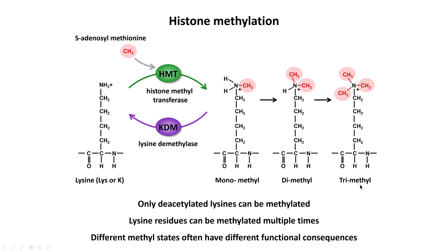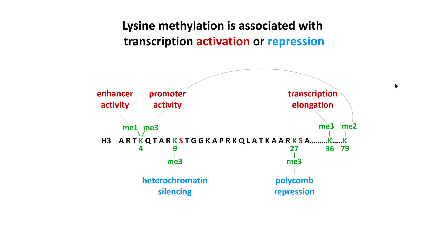These different methyl states — mono, di, tri — often have very different functional consequences because they bind completely different proteins. So histone methylation in itself doesn't predict what's going to happen. What matters is the methylation state and which particular lysine is methylated. For example, the trimethylation of lysine 4 and the dimethylation of lysine 79 on H3 are closely associated with active gene promoters, whereas the monomethylation of lysine 4 is more associated with enhancer elements.